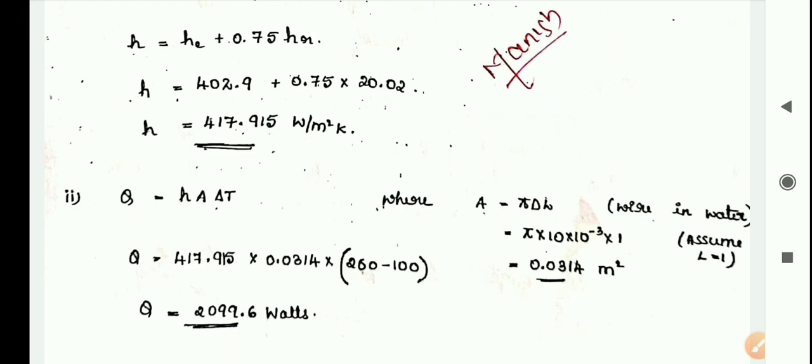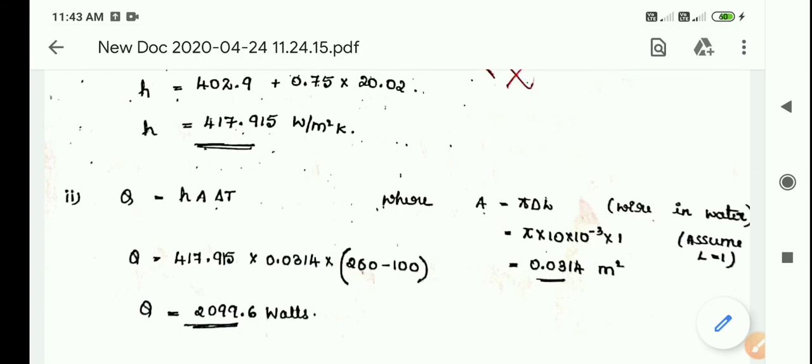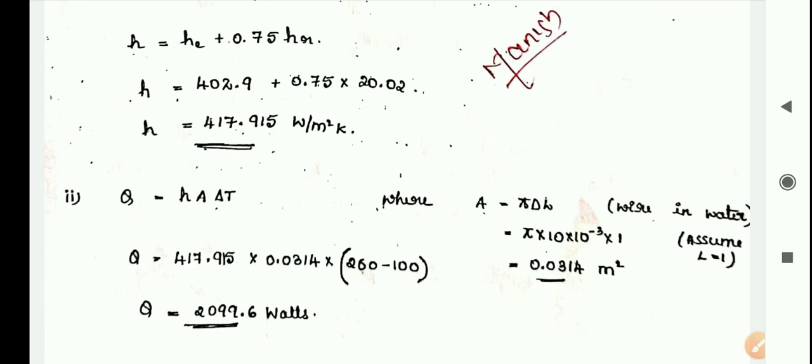Assume length as 1, so the area becomes 0.0314 meter square. So Q becomes 417.915 times 0.0314 times (260 minus 100), which equals 2099.6 Watt. This is a film boiling problem.